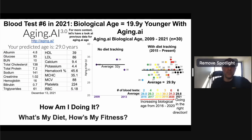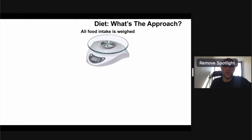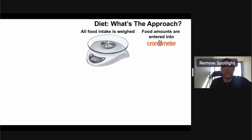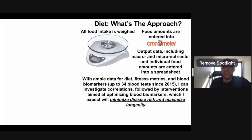So how am I doing it? I'll cover two aspects: diet and cardiovascular fitness. In terms of diet, I've been tracking my intake since 2015, starting with a food scale — I literally weigh everything. I enter food amounts into Cronometer, then put that data including macro and micronutrients into a spreadsheet. With enough data for diet, fitness metrics, and blood biomarkers — now up to 34 blood tests since 2015 depending on the biomarker — I can investigate correlations between those variables, then follow up with interventions aimed at optimizing blood biomarkers, which I expect will minimize disease risk and maximize longevity.